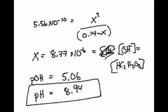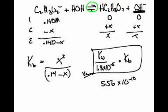Does that make sense? Yeah. We should have a base. And since we produced hydroxide, it makes it basic. Basic solutions have pHs greater than 7. Ours was 8 and some change, which is greater than 7, so it makes sense.